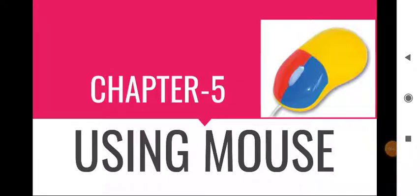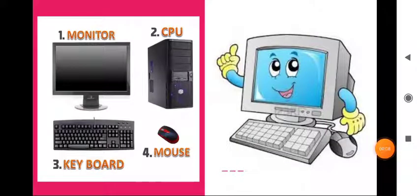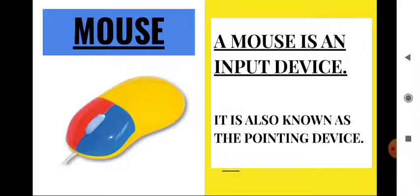Today we will read chapter 5 using mouse. As we already know about the essential parts of a computer — monitor, CPU, keyboard, and mouse — in this chapter we will discuss about mouse. A mouse is an input device and it is also known as the pointing device. Just look at this image: this is a mouse and it has two buttons and a scroll wheel at the center.